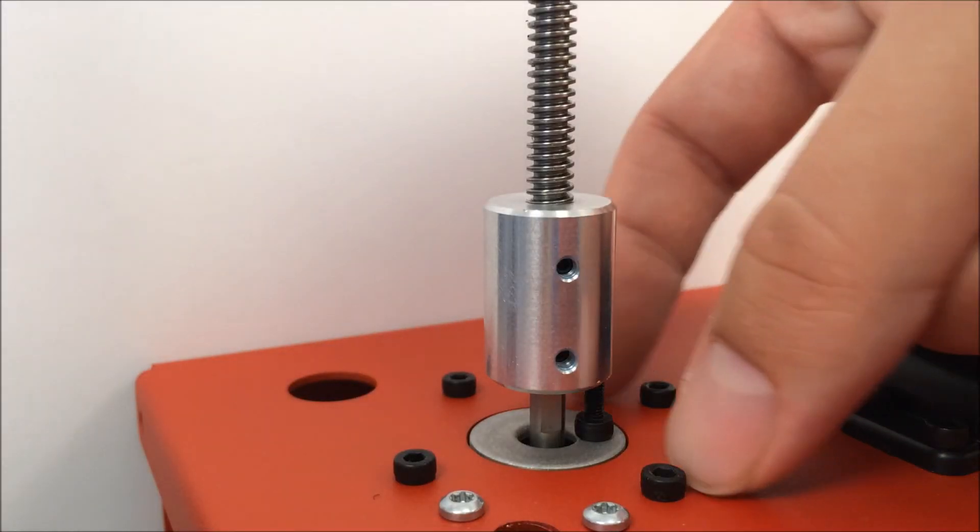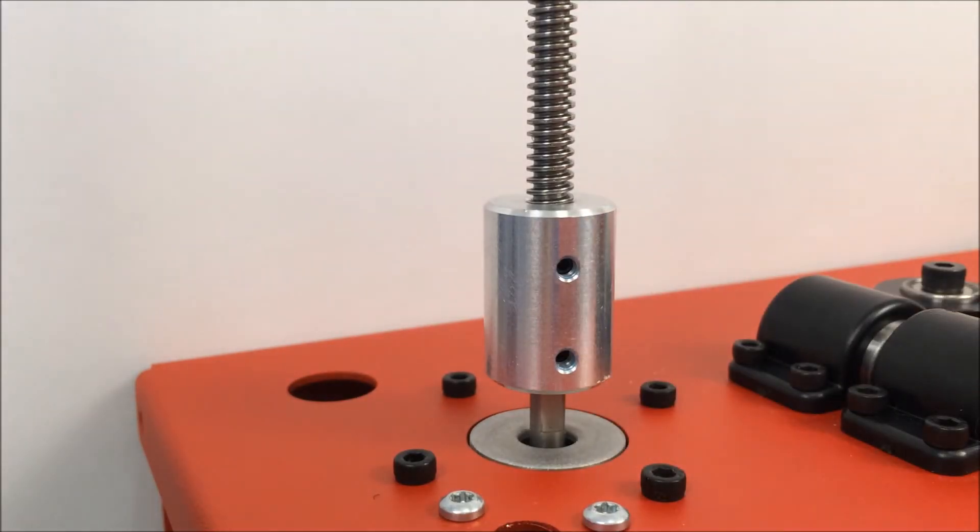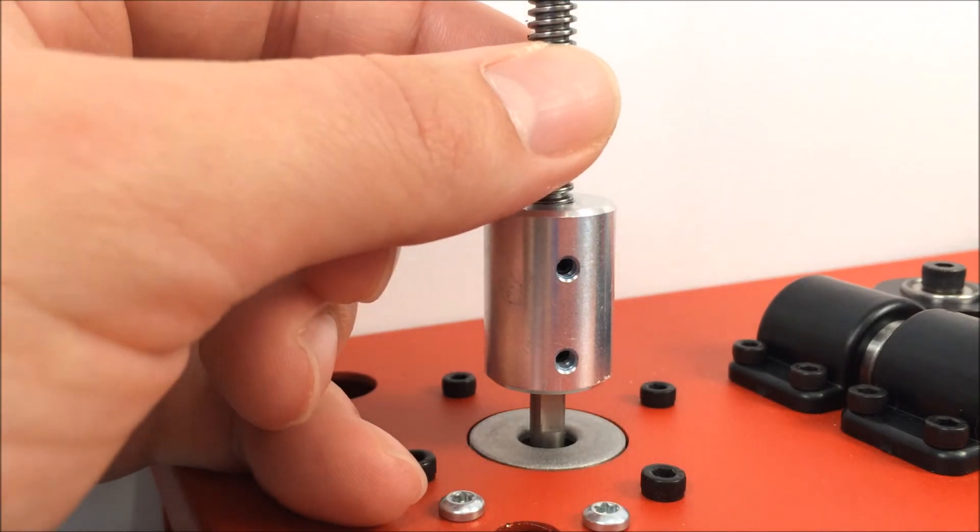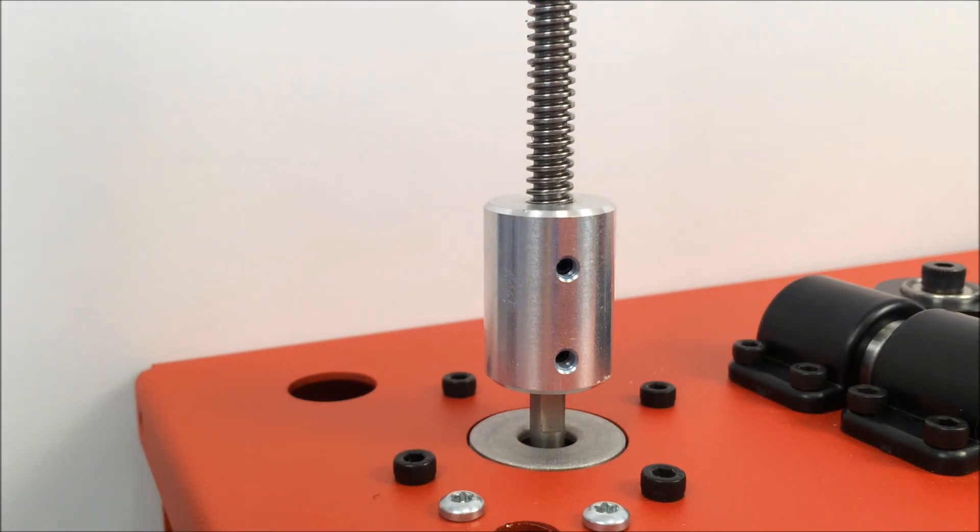At this point, there's no need for that M3 screw anymore. Just pull that out of the way and double check that your threaded rod is gripped firmly by the set screw. Just give it a little tug and it shouldn't move at all. So if you know it's firm and everything is finished, you're ready to move on.